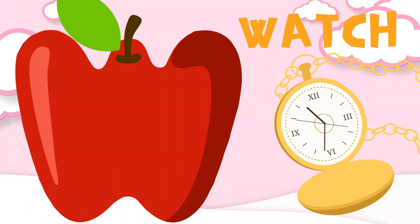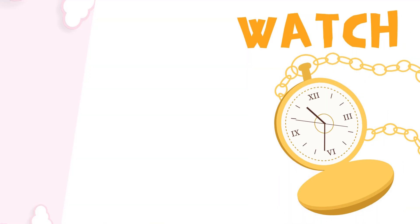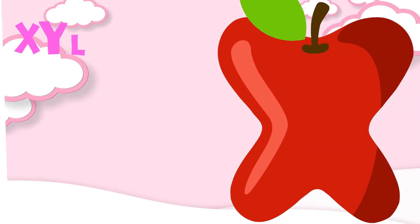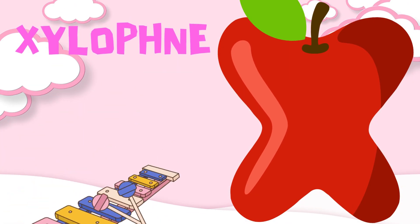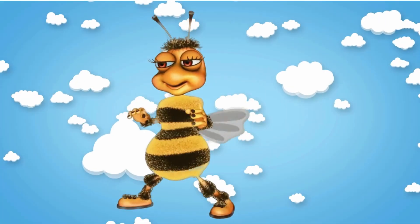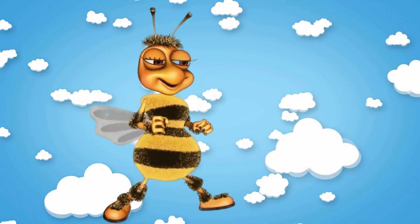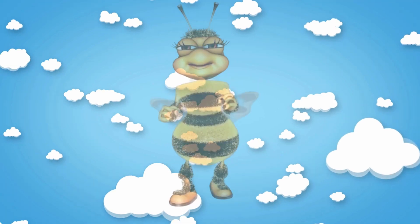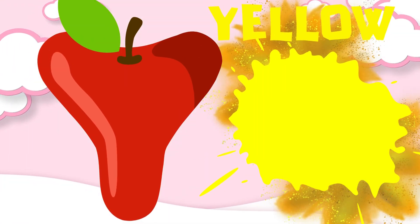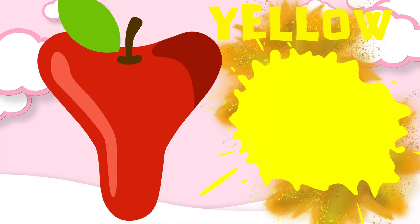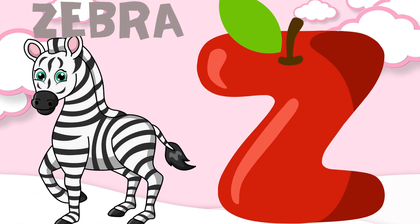W is for watch, w-w-watch. X is for xylophone, x-x-xylophone. Y is for yellow, y-y-yellow. Z is for zebra, z-z-zebra.